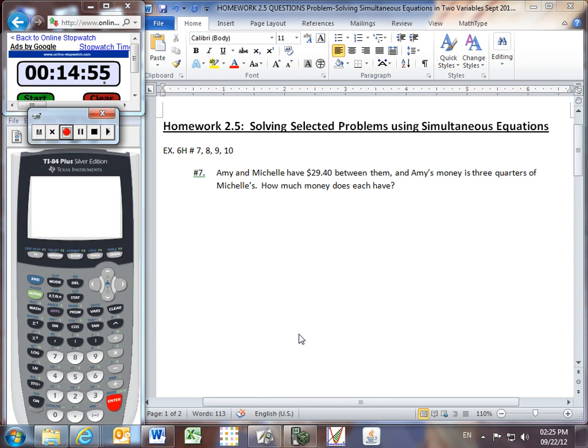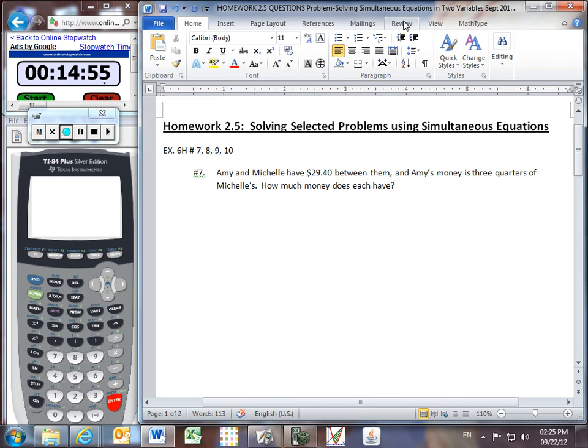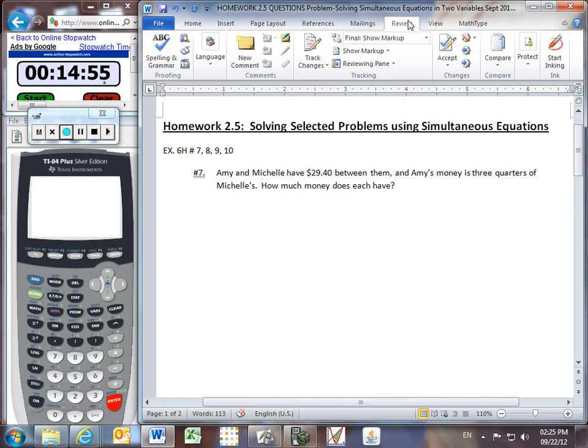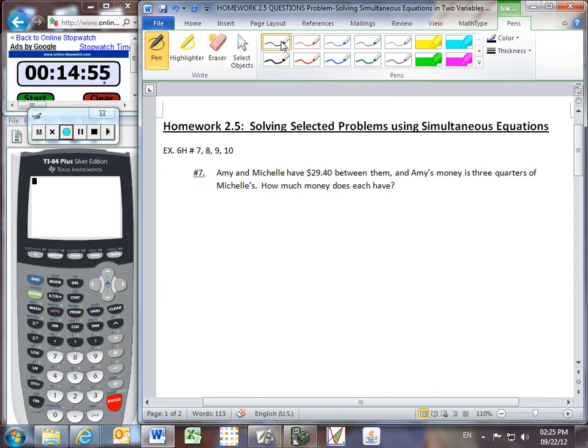Alright, we're going to be looking at some questions from the homework assignment on exercise 6H, the one that involves simultaneous equations. So, Amy and Michelle have got $29.40 between them. How much money does each have?